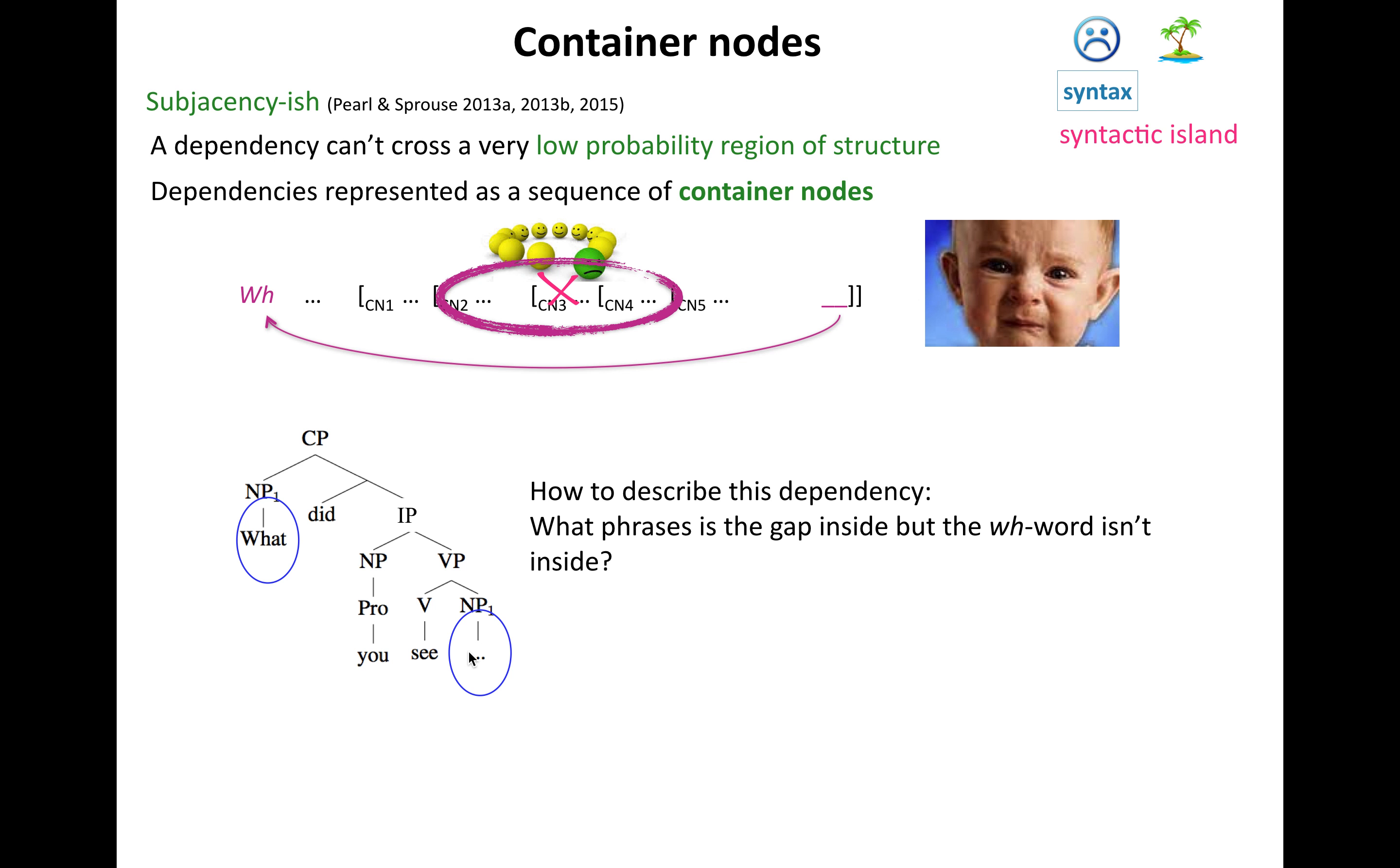What phrases is the gap inside? But the WH word isn't. Like, what phrases do you have to go through to get to the gap? So here, the ones we have to go through, we're already in this one. We're children of CP here. So we're already in CP. But we have to go through the IP, through the VP. And then we finally get to our little gap guy here.